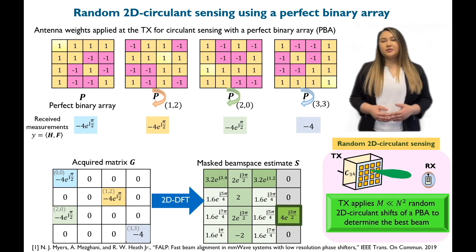Circulant sensing based beam alignment succeeds due to the fact that perfect arrays have a constant magnitude 2D DFT similar to Dirac matrices.